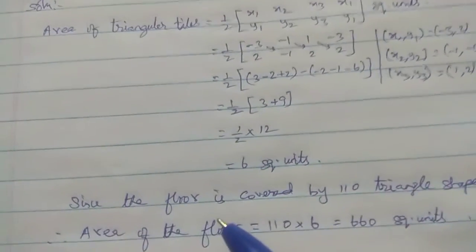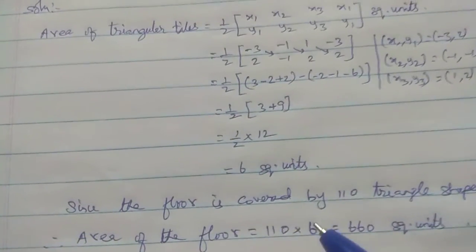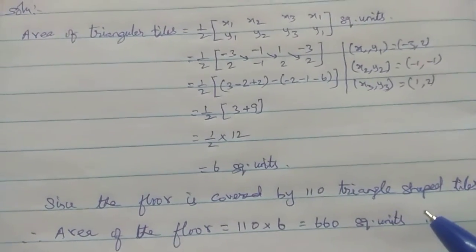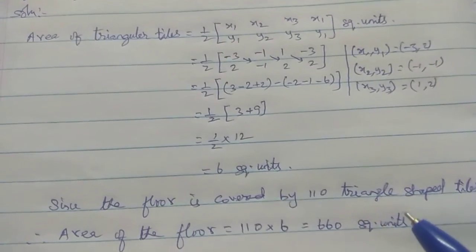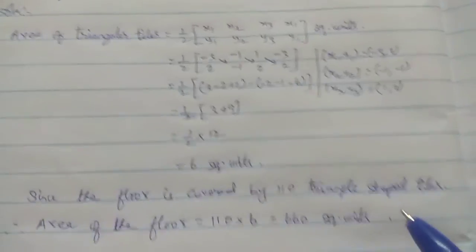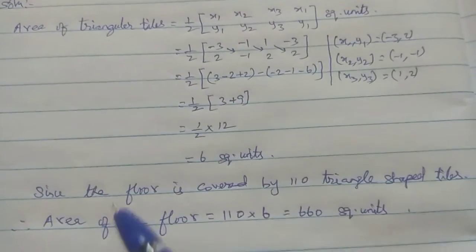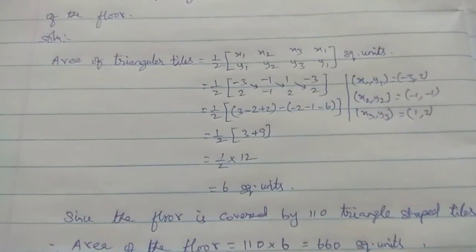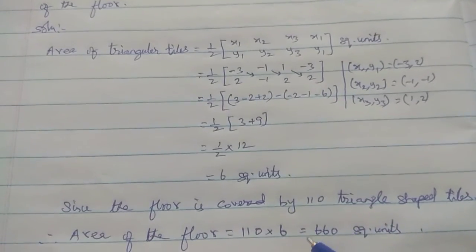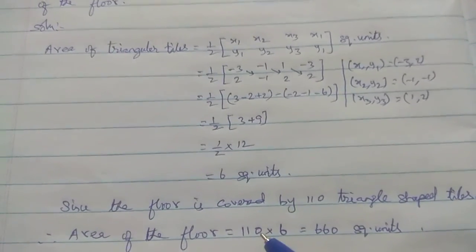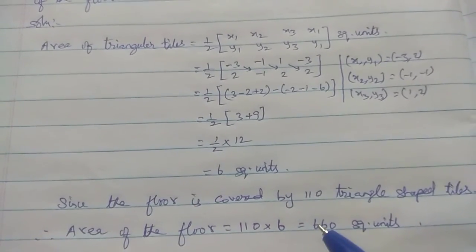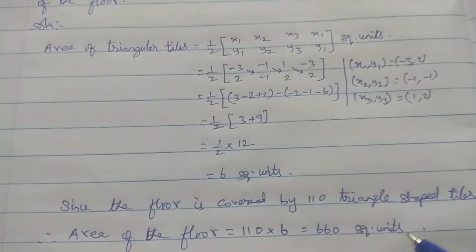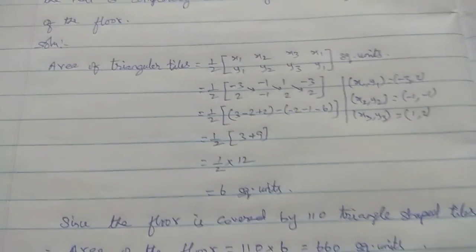Since the floor is covered by 100 triangle-shaped tiles, the area of the floor is equal to 100 into 6, which equals 600 square units. Therefore, the area of the floor is 600 square units.